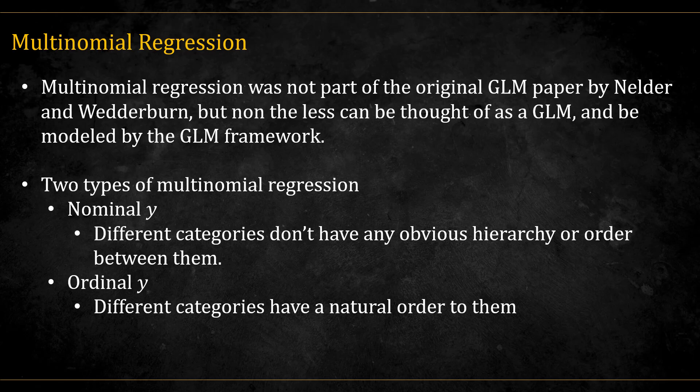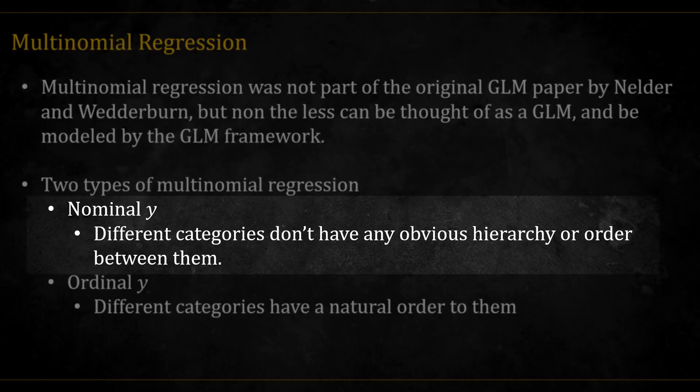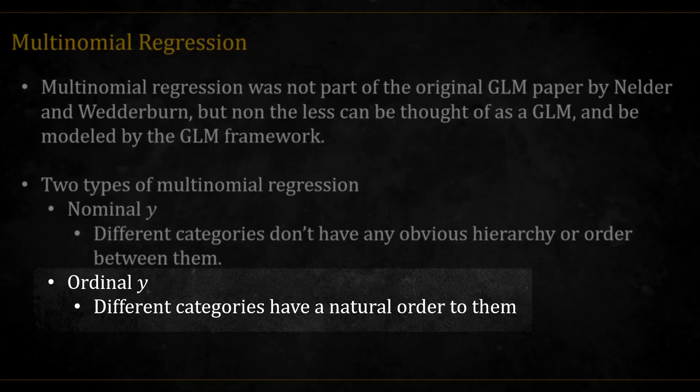There are two types of multinomial regression: one where the response Y is nominal, that is the different categories don't have any obvious hierarchy or order between them. Another is when the response Y is ordinal, that is when the different categories have a natural order to them.